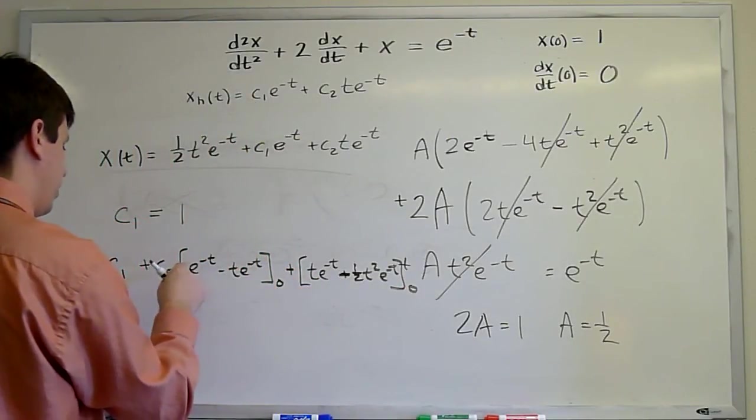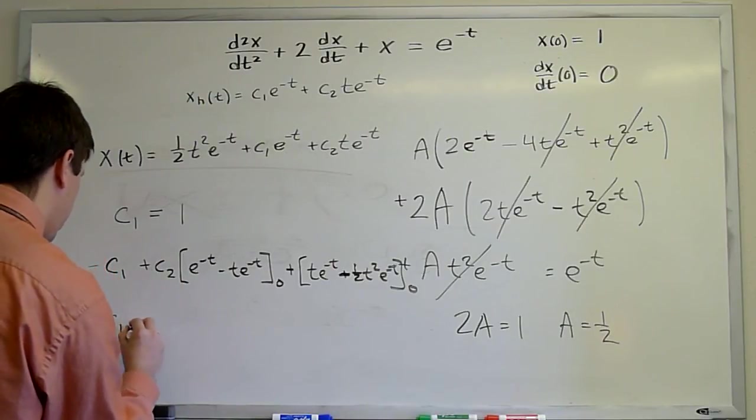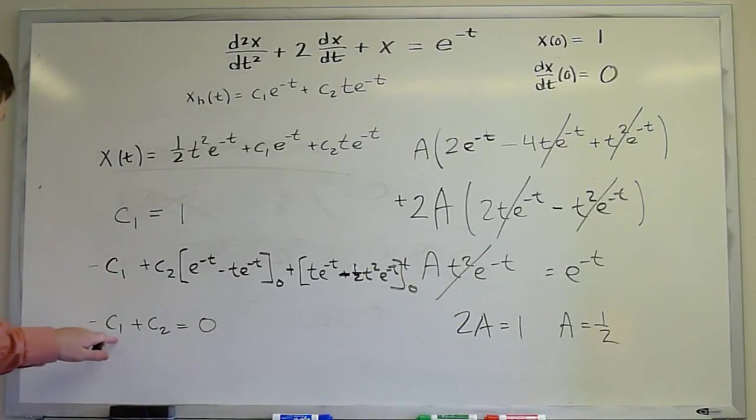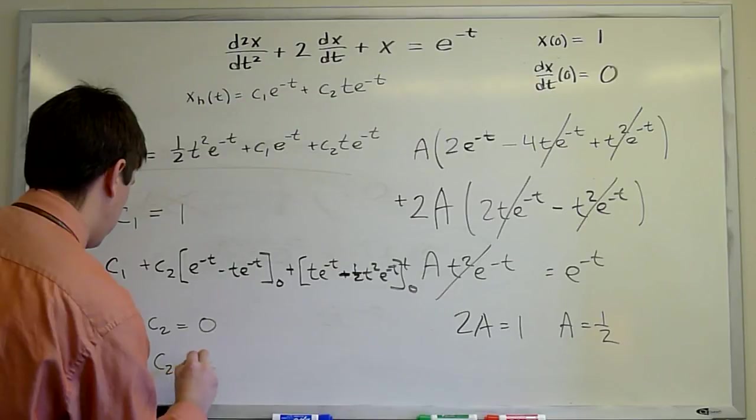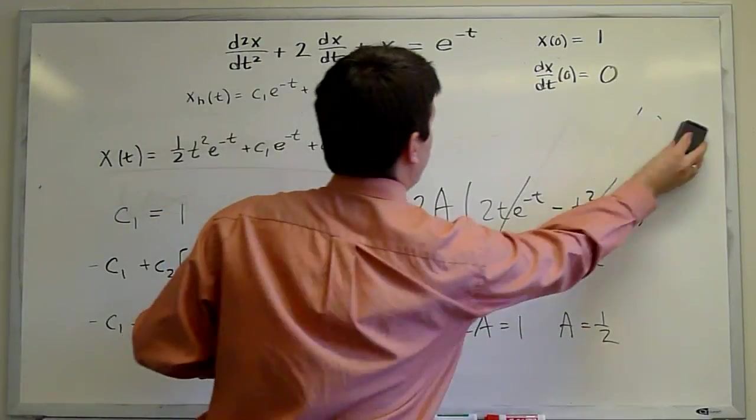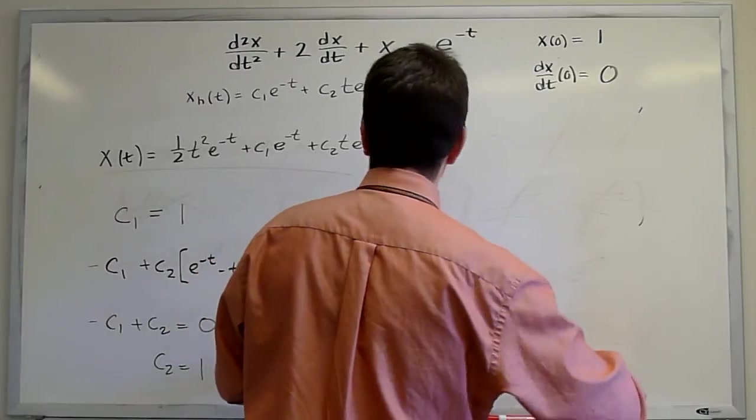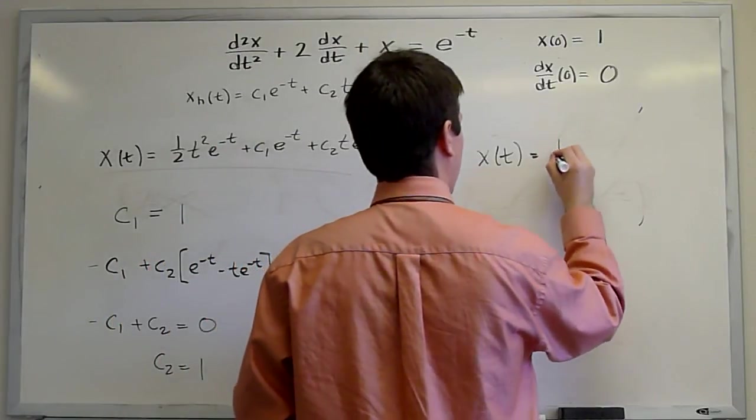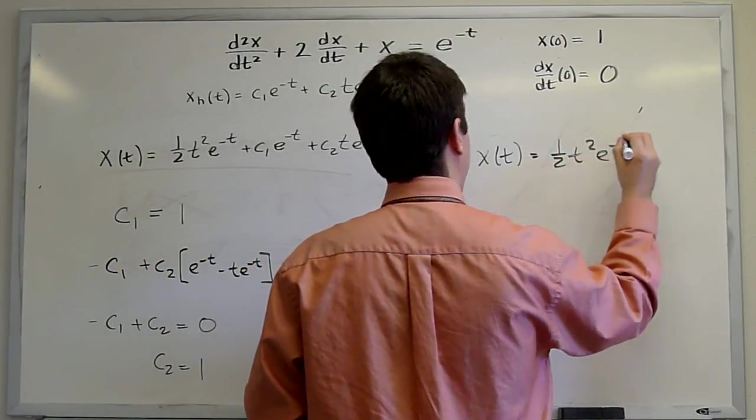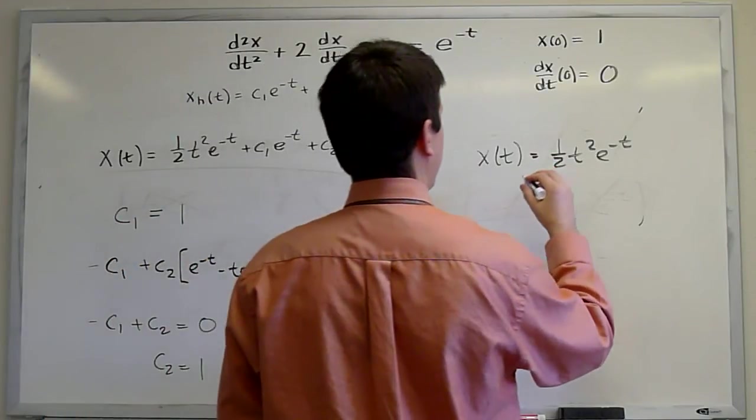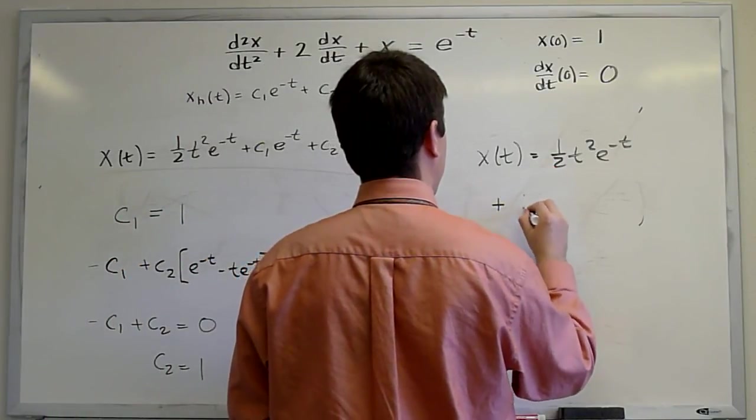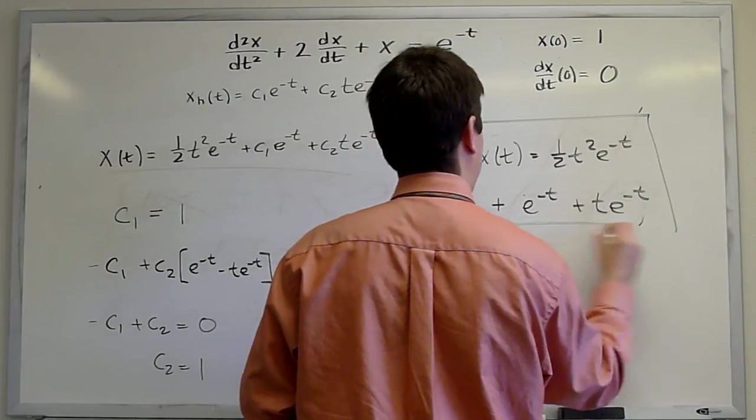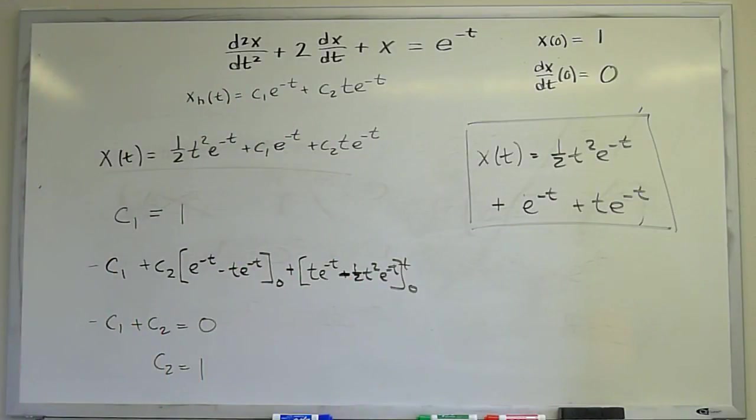That's 0, that's 0, that's 0. And so we pick up a c2. So minus c1 plus c2 equals 0. And since c1 is 1, that means c2 is also 1. So we are basically done. We will just rewrite it. The solution that satisfies all of these criteria is one half t squared e to the minus t. C1 and c2 are both 1. And so we have plus e to the minus t plus t e to the minus t.